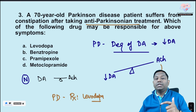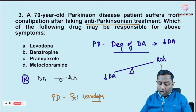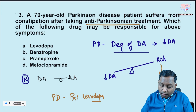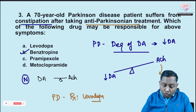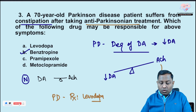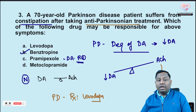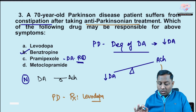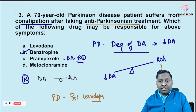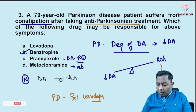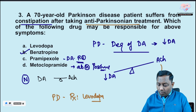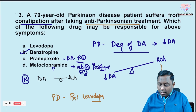Benztropine is a centrally acting anticholinergic drug and causes anticholinergic side effects, including decreased motility — which explains the constipation. Pramipexole and ropinirole are dopamine receptor agonists also used in restless leg syndrome; they cause hallucinations, nausea, vomiting, and diarrhea, but not constipation. Metoclopramide, a D2 blocker, is associated with extrapyramidal symptoms like abnormal posture.